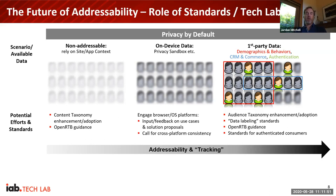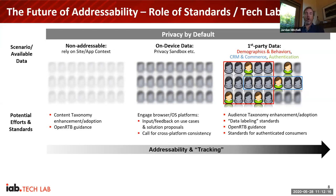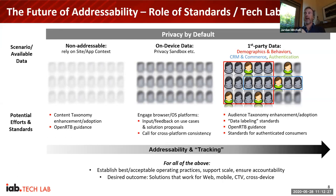We don't want every browser and OS platform doing things slightly differently, as that makes it very difficult for an open web world. On the first-party data front, we have an audience taxonomy for standardized ways that brands and publishers can describe their audiences for scale in buying and selling. We also have data labeling standards for transparency around how a given audience segment was defined — think of it like a nutritional label for audience data, similar to what you see on grocery store products.